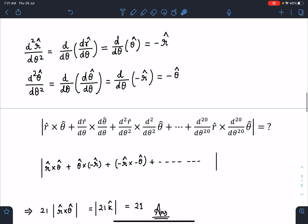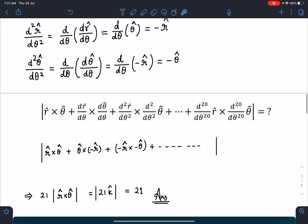When we substitute these values in the expression, you can follow this pattern: r cap cross theta cap, then theta cap cross (-r cap), then (-r cap) cross (-theta cap), and so on. If you realize carefully, each term equals r cap cross theta cap. Minus times minus becomes plus one. Like this, it goes up to 21 terms. The mod of r cap cross theta cap is k cap, which is 1. So the answer is 21.